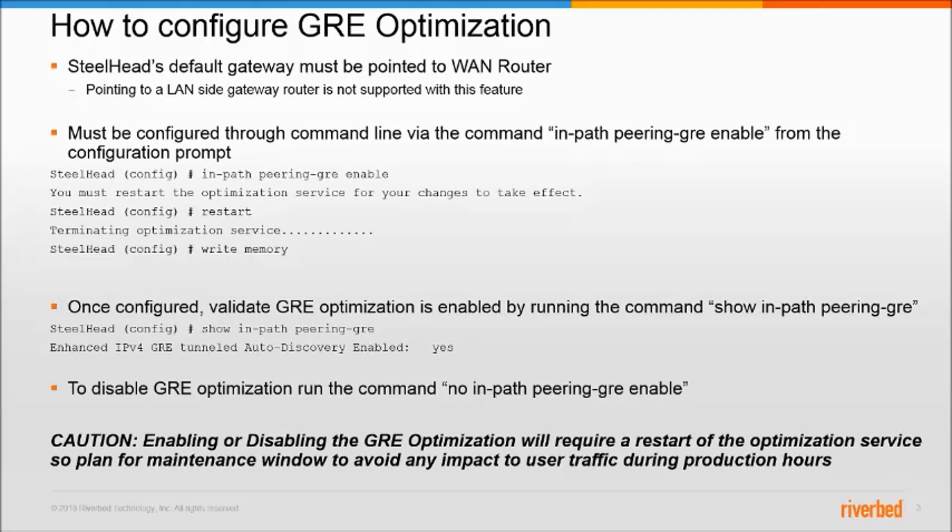Now, in order to back out this configuration, simply go back into the configuration prompt, run the command no in-path peering-gre enable, and restart the optimization services.